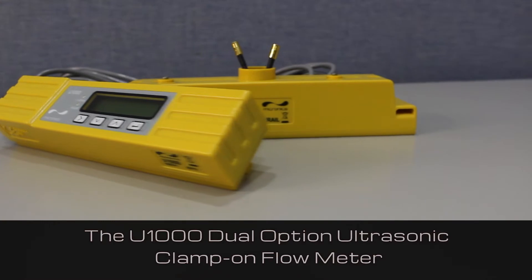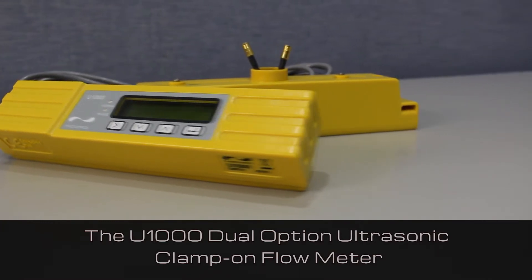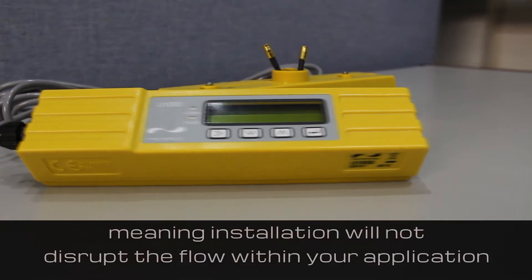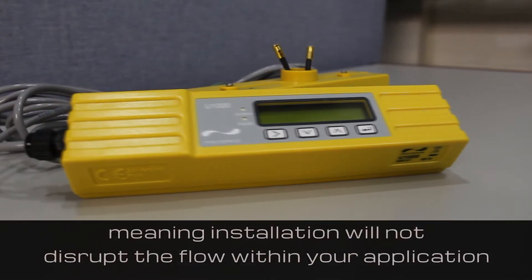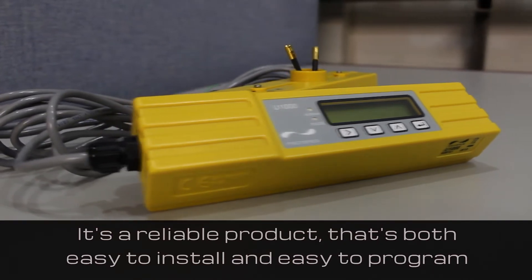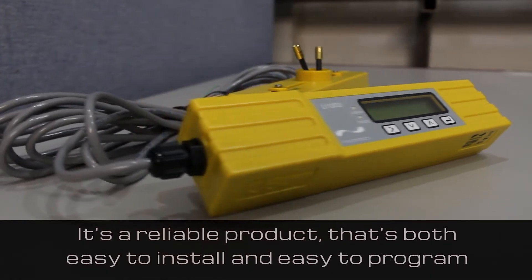The U1000 Dual Option Ultrasonic Clamp-on Flow Meter. This meter can be attached to the outside of the piping, meaning installation will not disrupt the flow within your application. It's a reliable product that's both easy to install and easy to program.